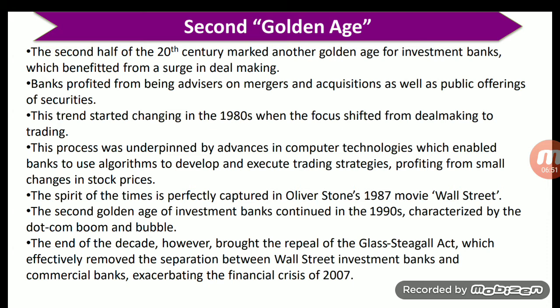Banks profited from being advisors on mergers and acquisitions as well as public offerings of securities. This trend started changing in the 1980s when the focus shifted from deal-making to trading. This process was underpinned by advances in computer technologies, which enabled banks to use algorithms to develop and execute trading strategies in the capital market, profiting from small changes in stock prices. The spirit of the times is perfectly captured in Oliver Stone's 1987 movie Wall Street.